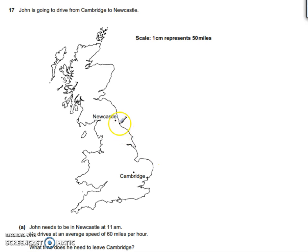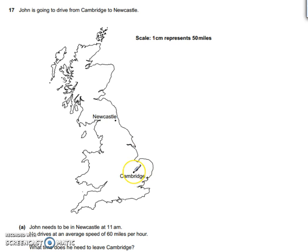The first thing we need to do is work out how far it actually is between Newcastle and Cambridge. Because I've given us a scale here, we need to measure this distance in one very nice straight line. If I was you, I would connect them up using a ruler and measure this, and you should find that the distance between them is 4cm.